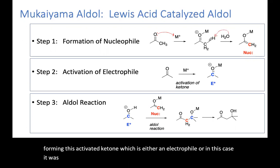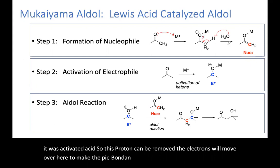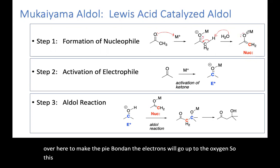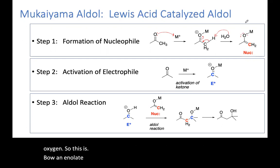So this proton can be removed; the electrons will move over here to make the pi bond, and the electrons will go up to the oxygen. So this is an enolate anion bound to the metal.